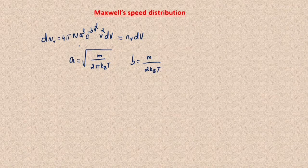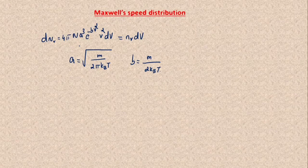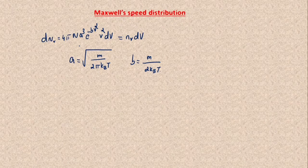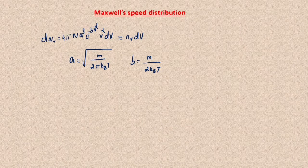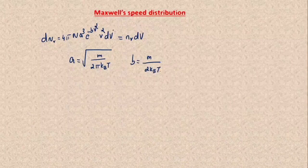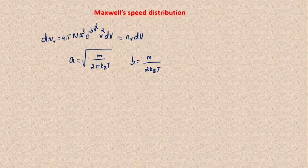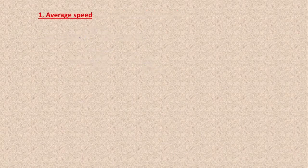Maxwell explained that at any given temperature, the speed of the molecule varies from zero to infinity. In this equation, dN_V stands for the number of molecules having speed between V and V plus dV, and capital N stands for the total number of molecules. Now let's discuss the different types of speed in a gas molecule.